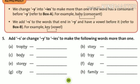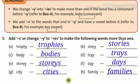Now, come to the part 5. Add S or change Y to IES to make the following words more than one. Means, here, we have to make these words in plural forms. First, trophy - trophies. As you can see, here, H before Y. So, we put IES to make it plural. Then, story. Here, R before Y. So, stories. S-T-O-R-I-E-S.